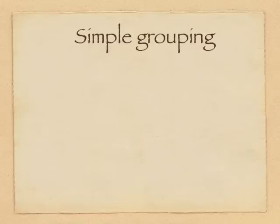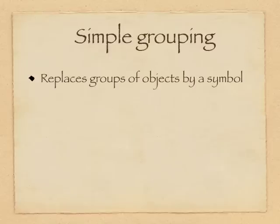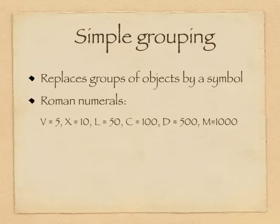Next, above simple counting, would be simple grouping. In this case, you replace groups of objects by a single symbol. Roman numerals are the basic example. The symbol V would stand for five, X for ten, and so on.